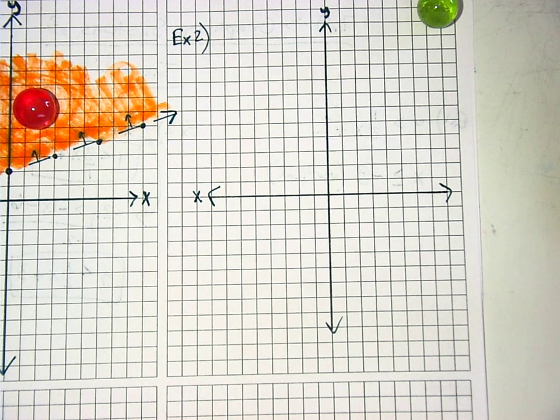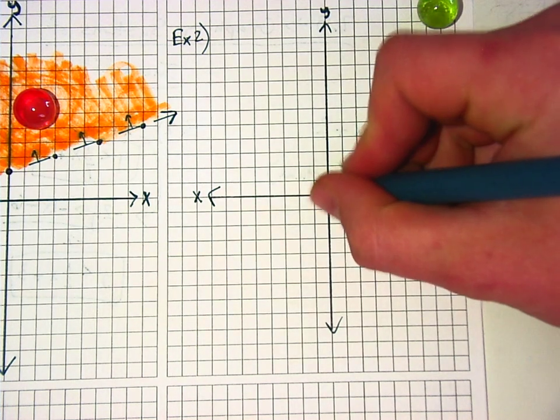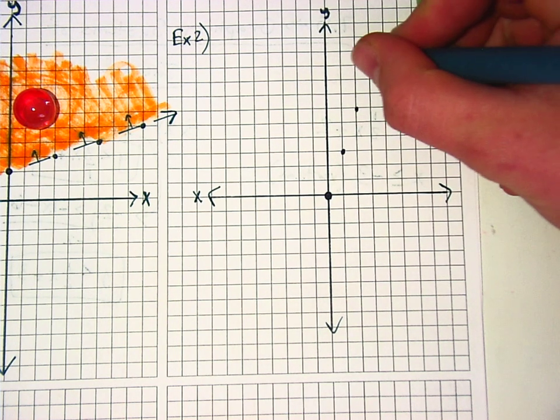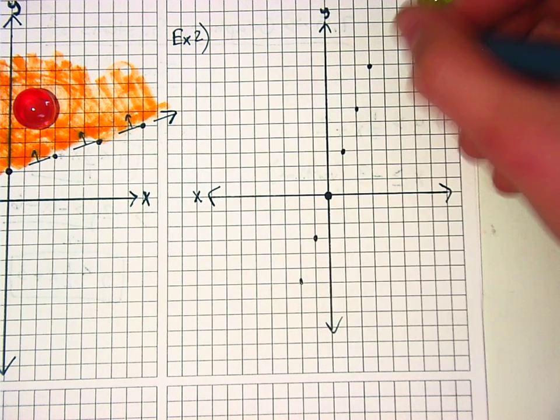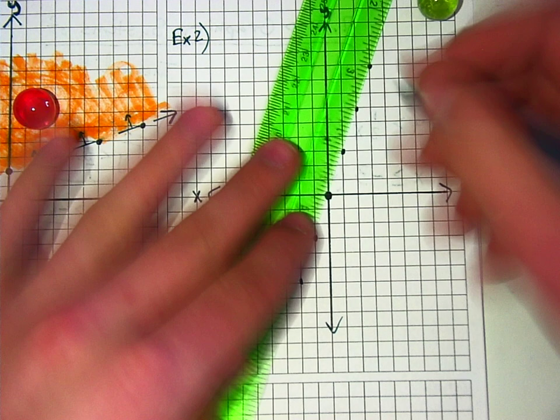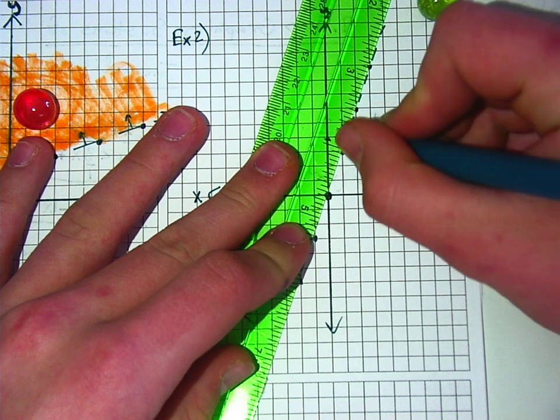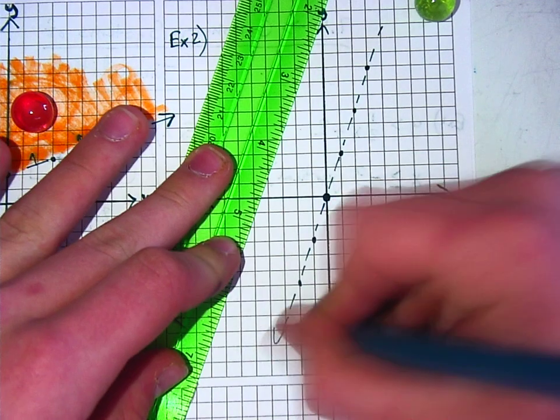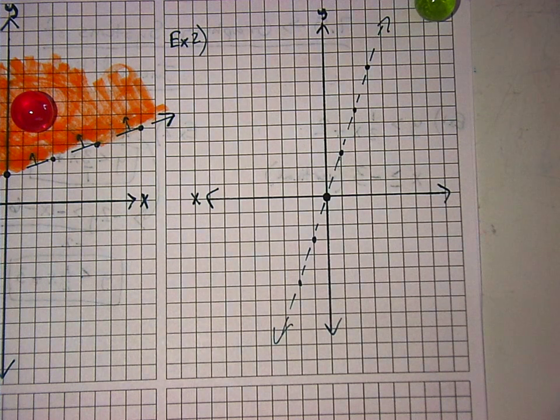So start with y is less than 3x plus 0. You start on the 0, 0, and then you go up 3 over 1, up 3 over 1, up 3 over 1. And then that's a line dotted. And then you're going to shade to the right of it.